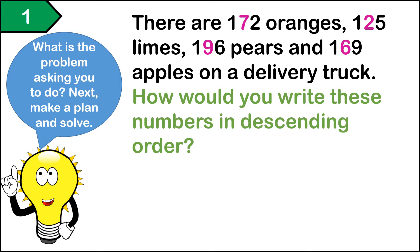When solving word problems, first we must ask: what is the problem asking us to do? This problem is asking us to write the numbers in descending order. Next, we must think of a plan. We are going to use place value to help us figure out what numbers should be written down first, second, third, and then fourth. All of these numbers have the digit one in the hundreds place, so we must go to the next place value position, which is the tens.